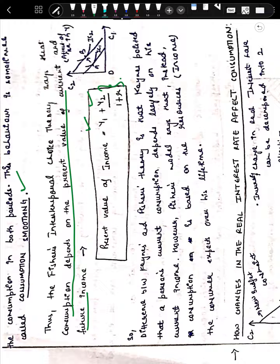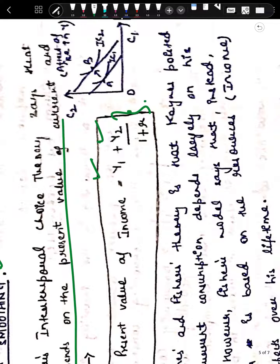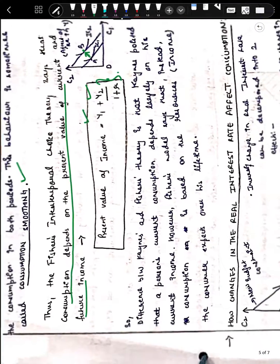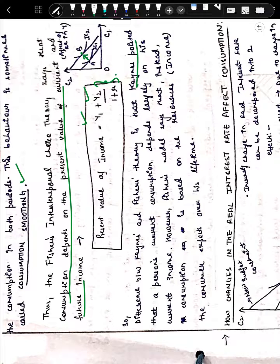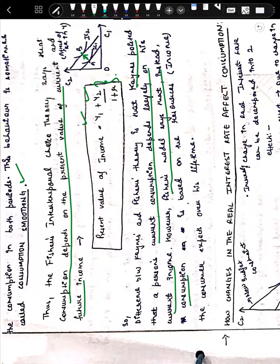Whenever there is an increase in income, there will be a rightward shift of the budget constraint, as shown, and we shift to a new higher optimum level from point A to point B, consuming more in both time periods. The difference between Keynesian theory and Fisher's theory is that Keynes posited that a person's current consumption depends largely on current income — that was Keynes' third conjecture. However, Fisher's model says that consumption is based on the resources and income a consumer expects over his entire lifetime.